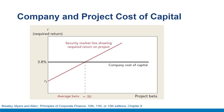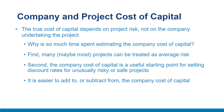The company cost of capital rule tells the firm to accept any project offering a return of more than 3.8%. The firm's company cost of capital is about 3.8%, which is the correct discount rate only if the project beta is 0.50. In general, the correct discount rate increases as the project beta increases. The firm should accept projects with rates of return above the Security Market Line relating required return to beta. The true cost of capital depends on project risk, not on the company undertaking the project.